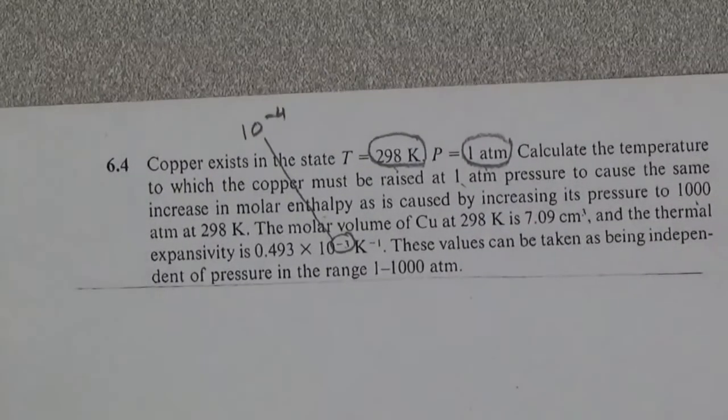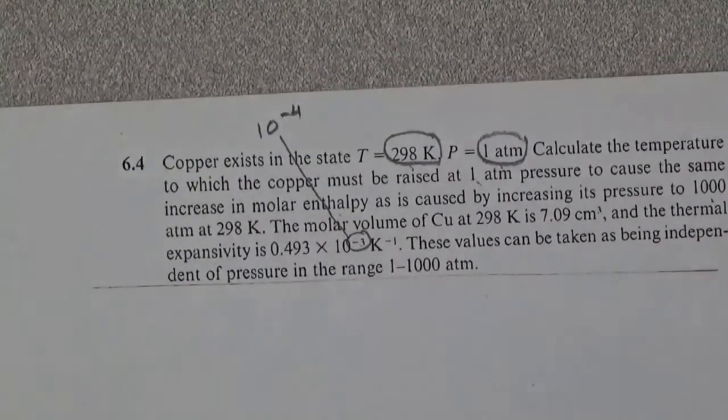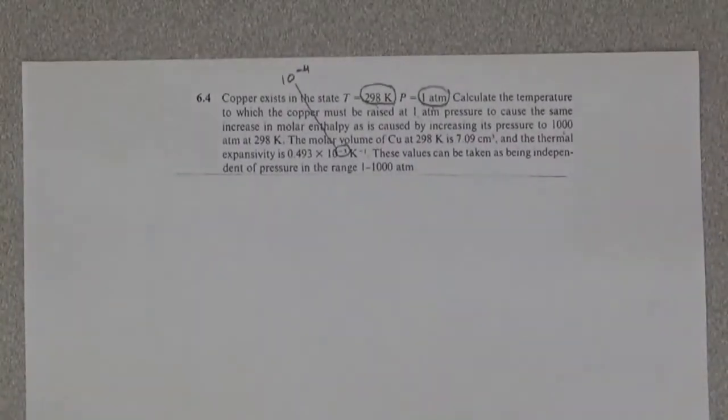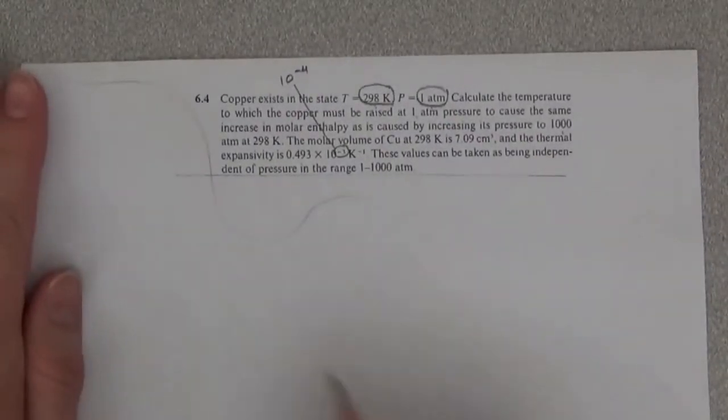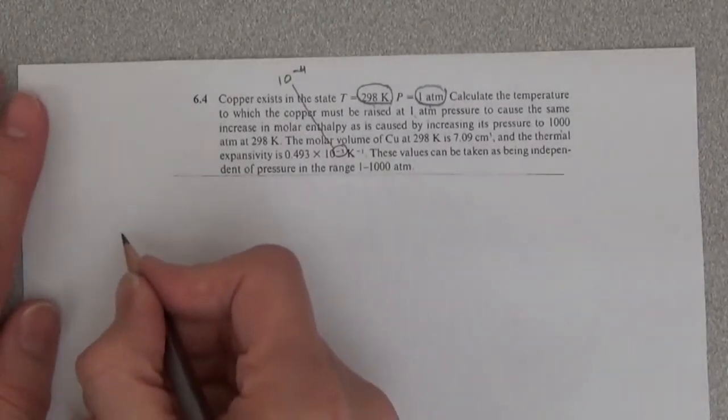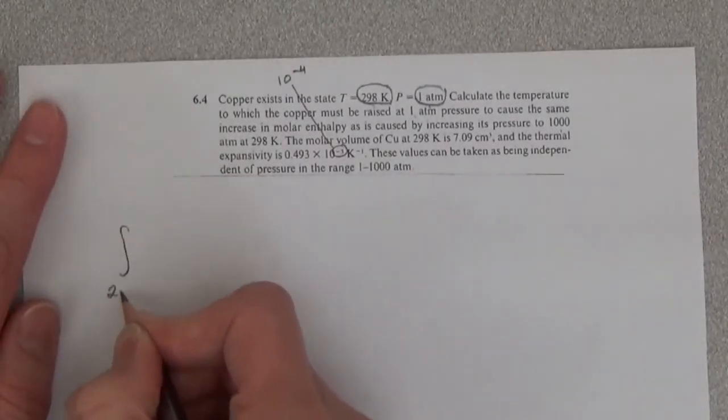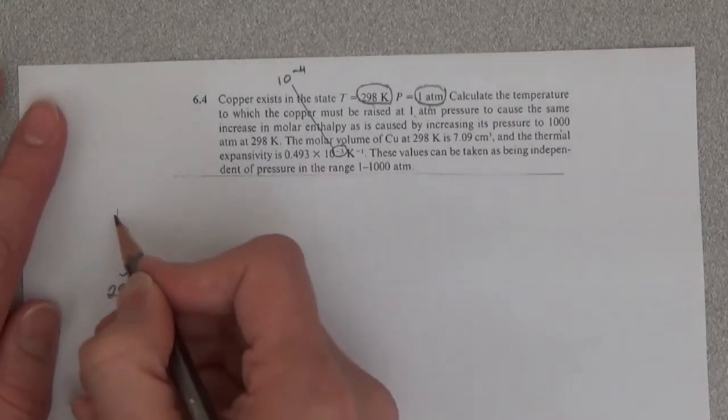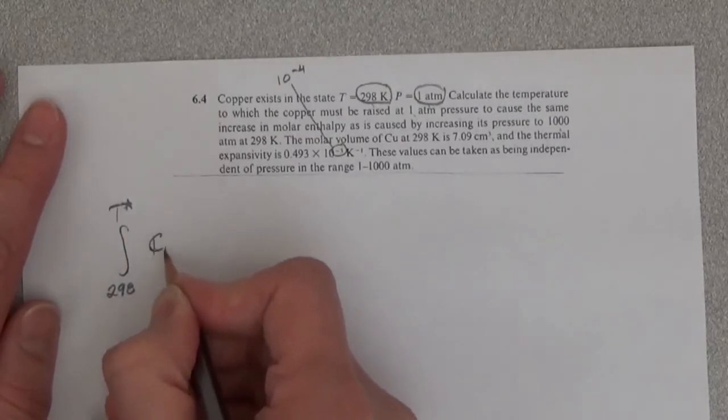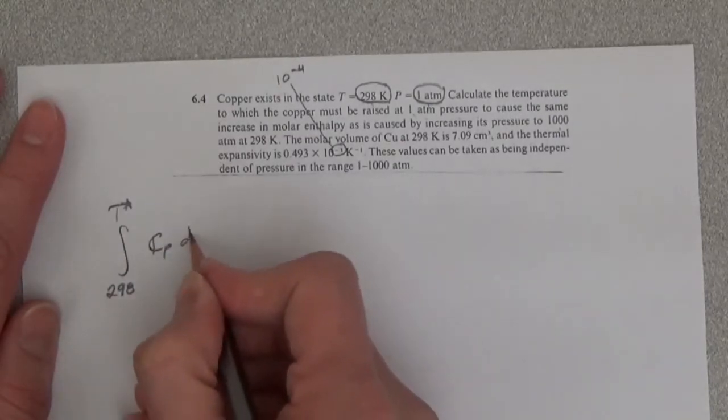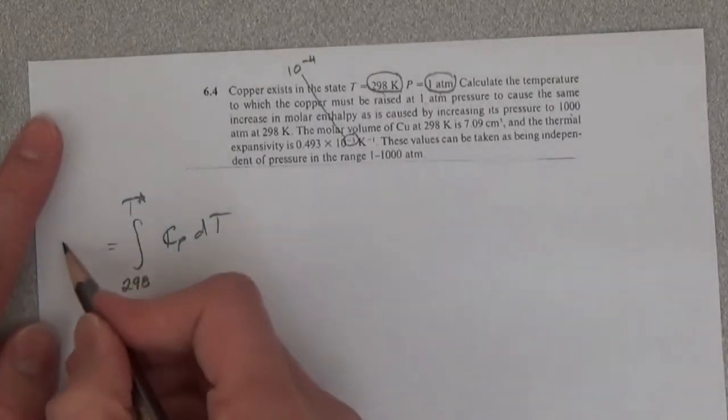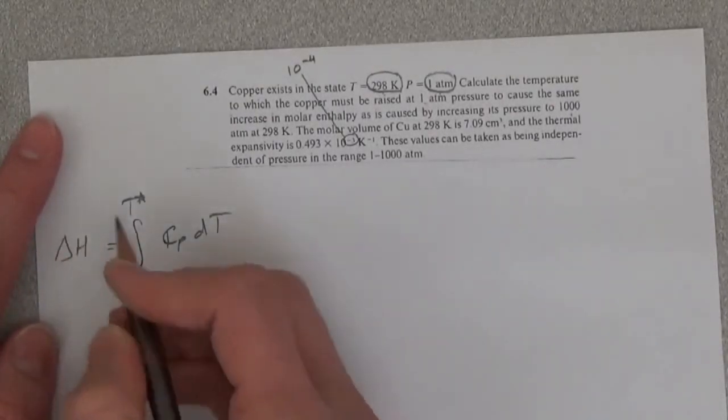So let's write this out. Basically, we're going to say that the change in enthalpy due to change in temperature is the integral of Cp dT equals delta H.